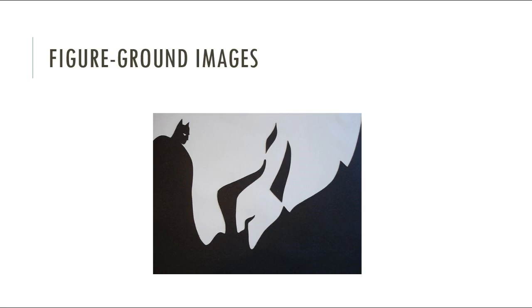These figures come from a field of psychology called Gestalt psychology, which deals with human perception — how we see and organize information in our minds. As I hope you could tell from looking at those three images, we're simply incapable of seeing the figure and the background at the same time. We can flash pretty quickly back and forward between them; sometimes they seem to flicker between the figure and the background. However, we cannot see both of them at the same time. The picture transforms depending on our perception of it at the time.